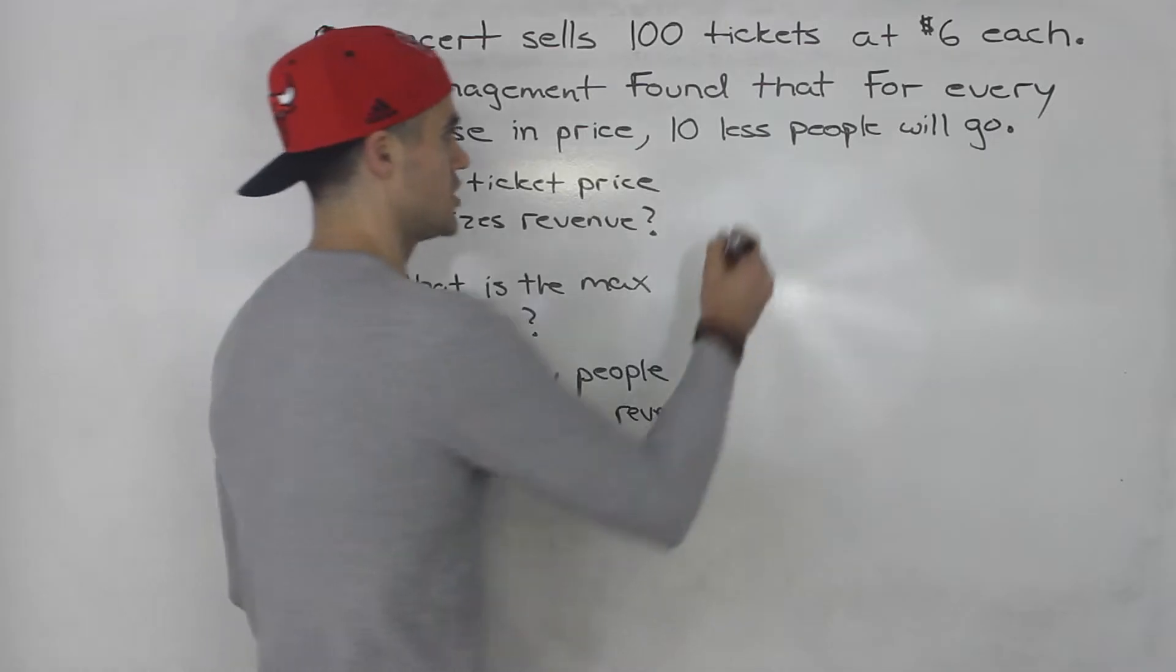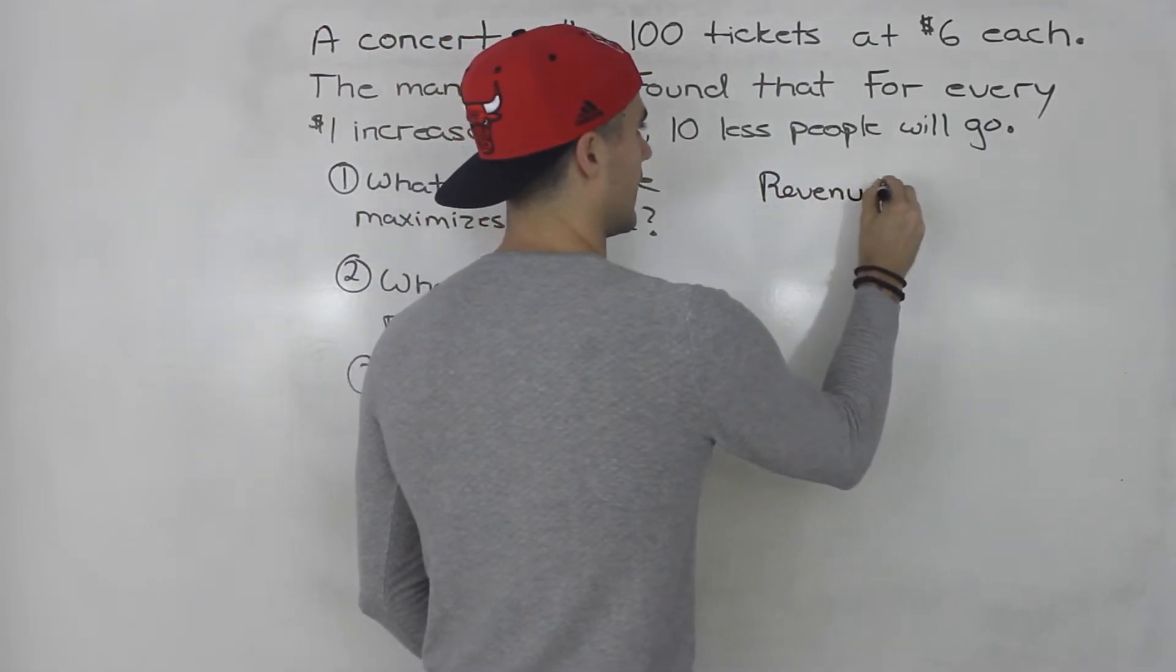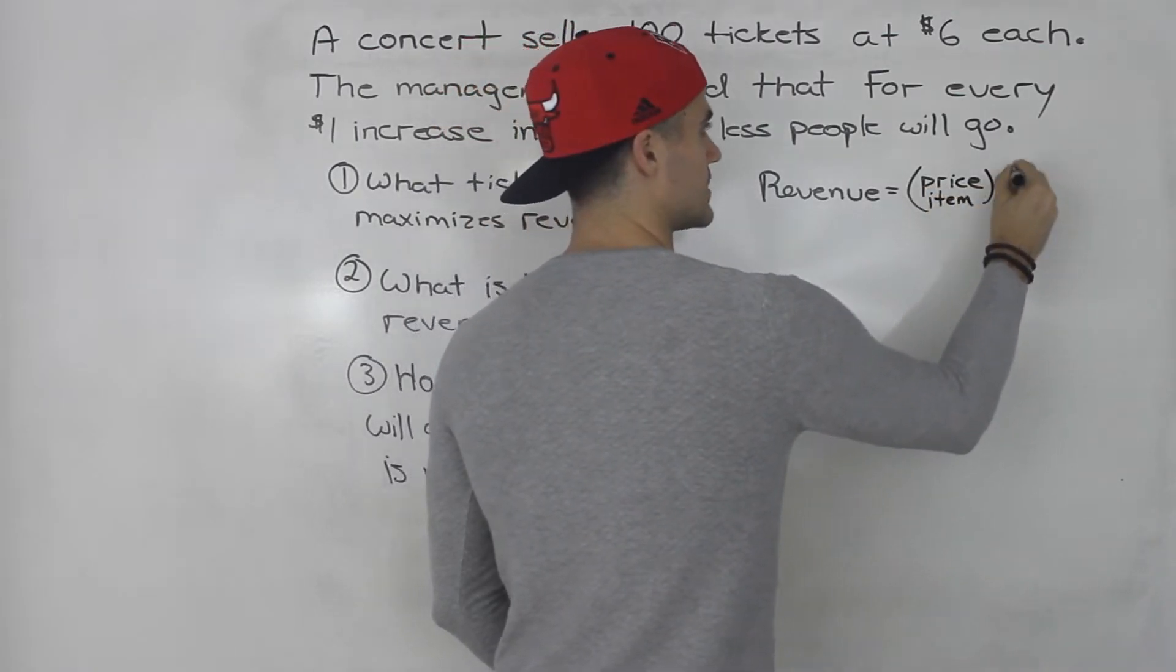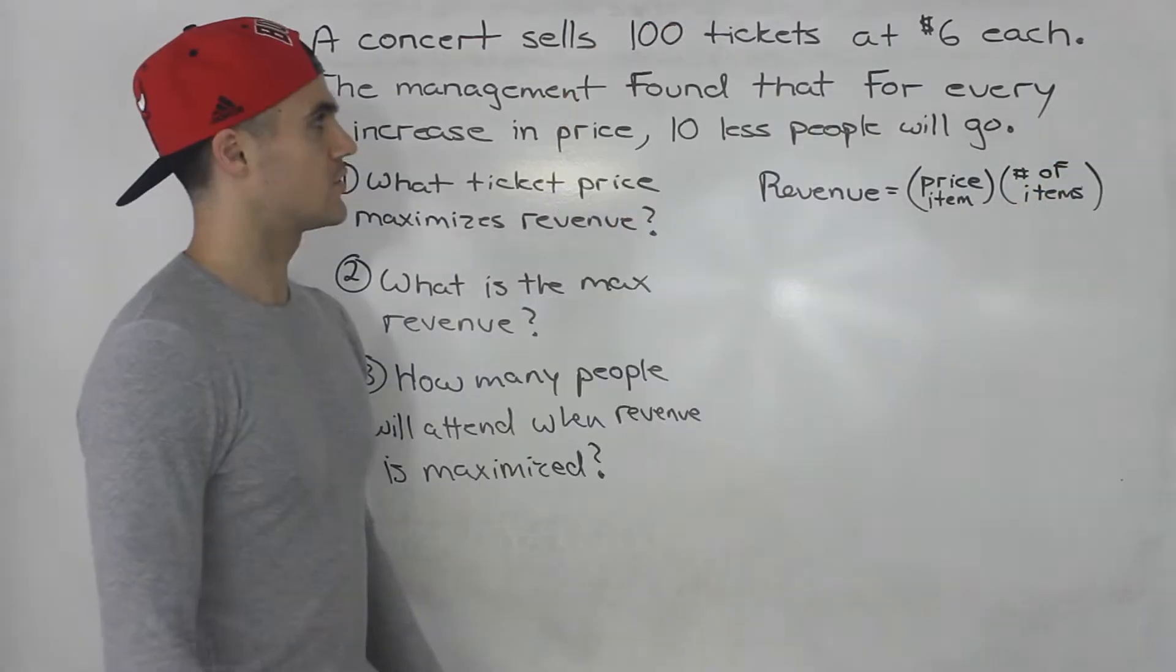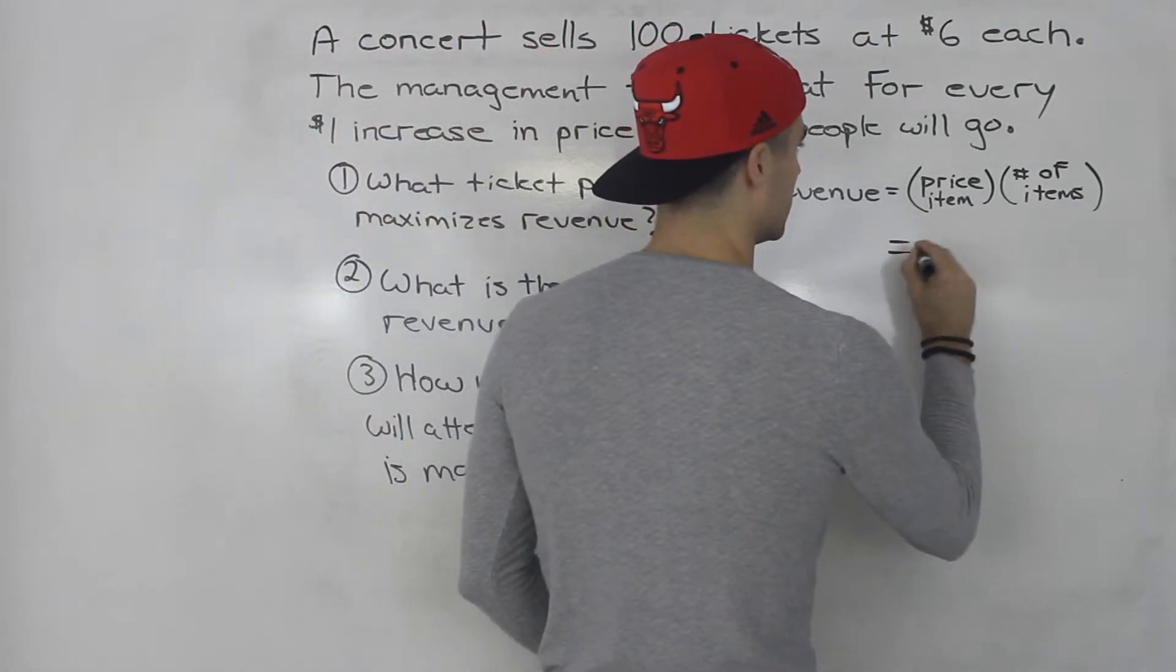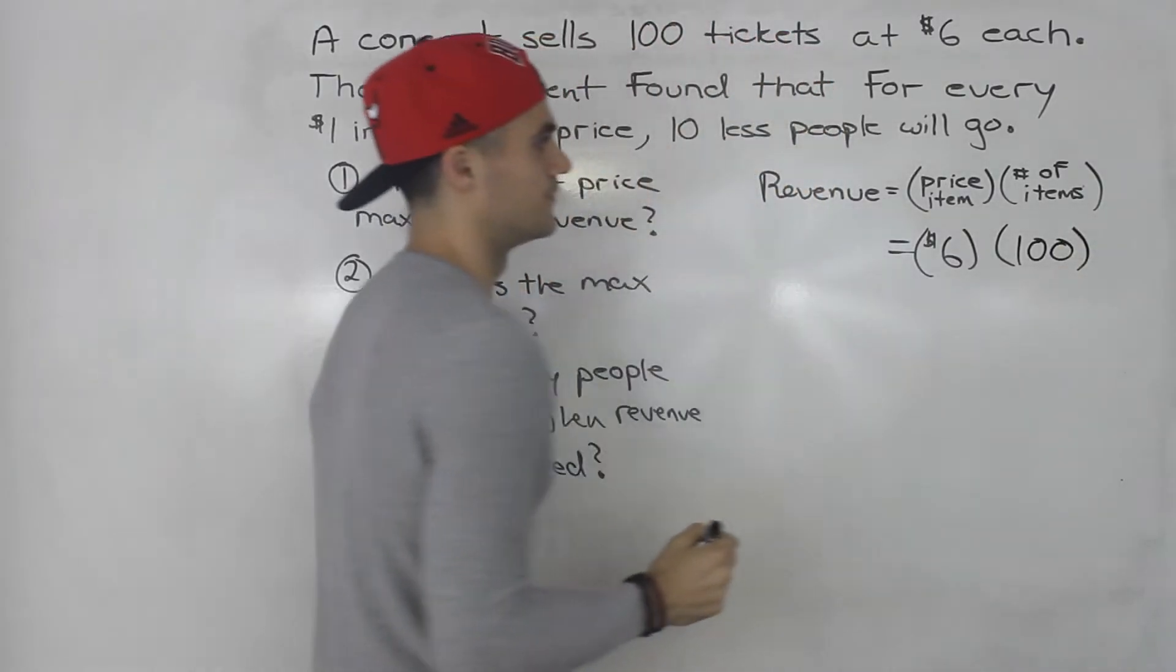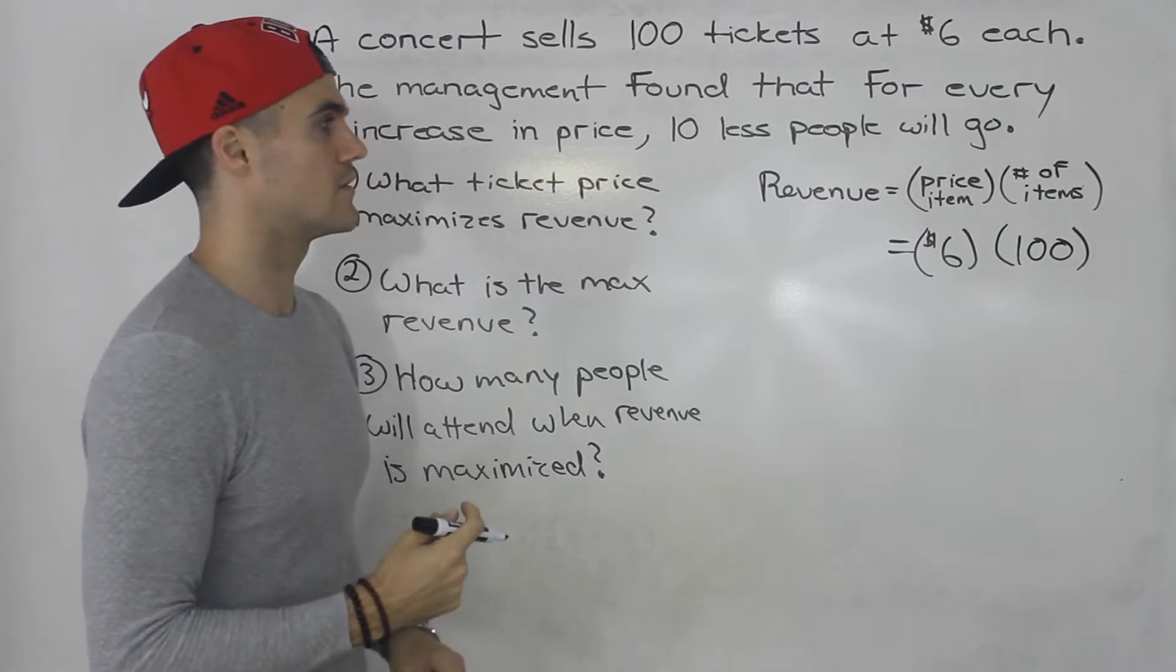In general, we're talking about revenue here. Revenue is always the price for an item times the number of items. Currently the price of each ticket is $6 and there are 100 tickets being sold. So we know the current revenue right now is $600 for this concert.